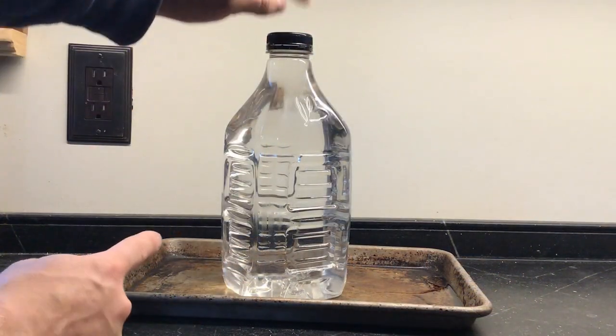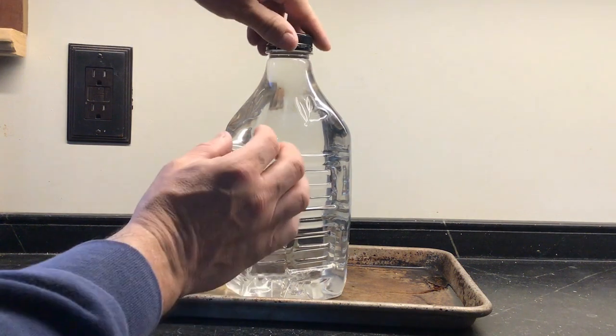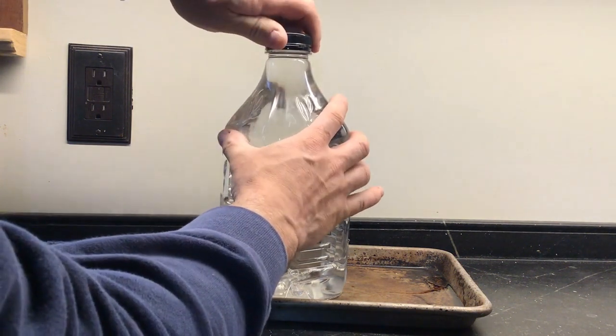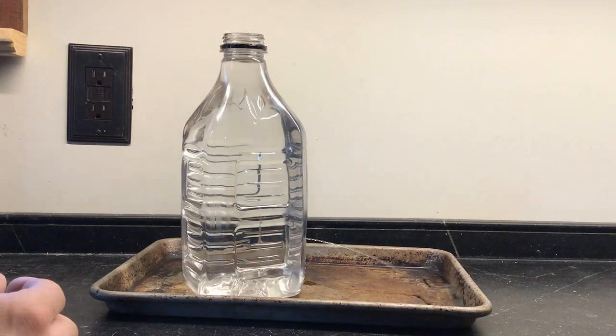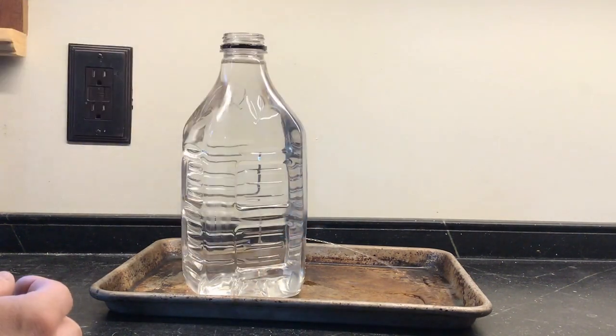Now I want to try something else. I want to try taking the cap off the bottle and see what happens. So here we go. Let's unscrew the lid. You'll notice as soon as I unscrew the lid and take the lid off, the stream of water starts back up.